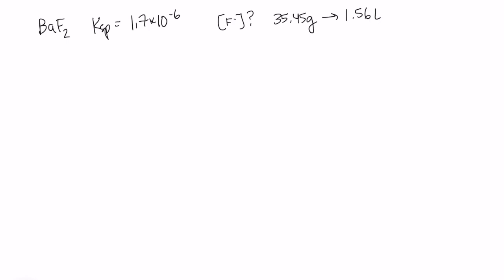So we're going to do two things. The first thing we're going to do is write out our Ksp equation, the chemical equation. We have BaF2 solid. It's going to make barium ions and two fluoride ions.